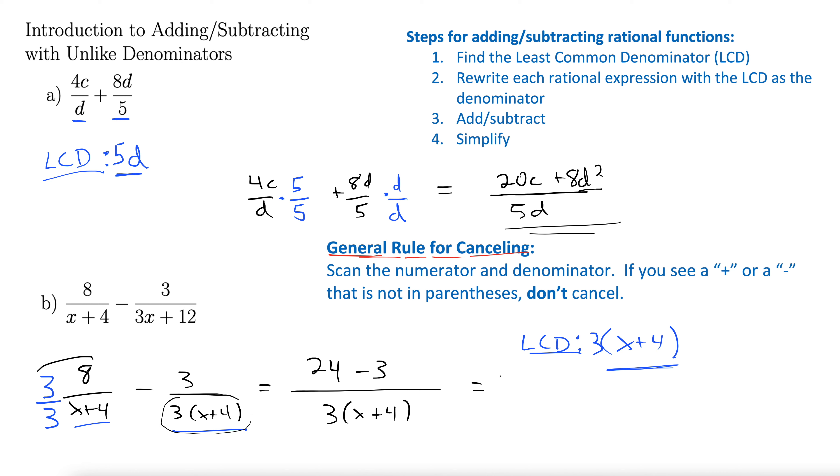So that comes to 21 over 3x plus 4. And look, we have some nice simplification here. Those cancel, 7 over x plus 4.